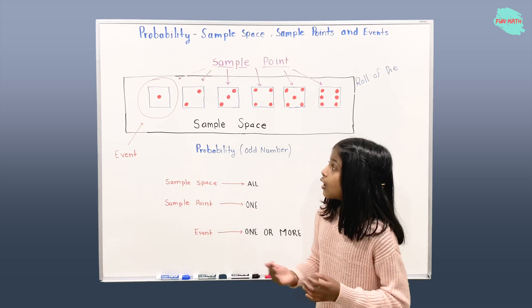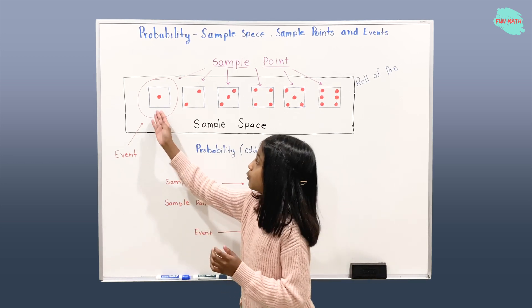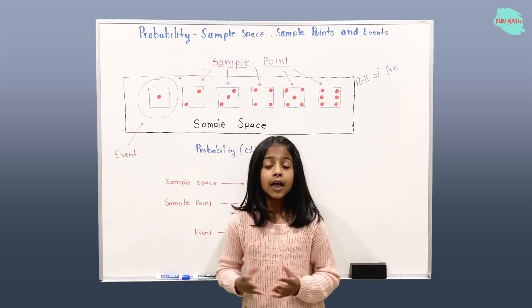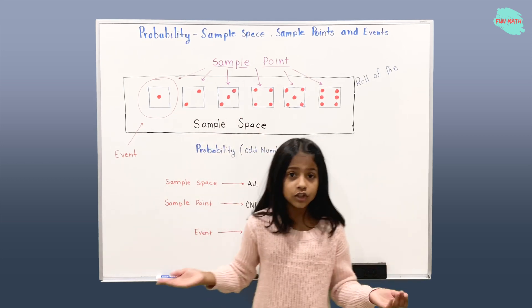So like one of the odd numbers can be 1, that's one of the events. Or there can be 1, 3, and 5. That's another event.